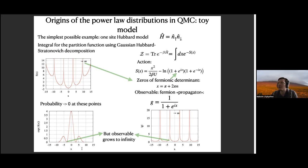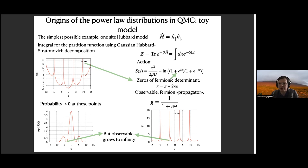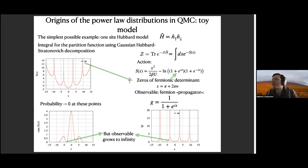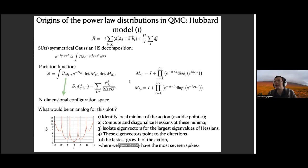At these walls, probability goes to zero, but the fermionic observable — in this case simply the inverse determinant, i.e., the propagator — goes to infinity at exactly the same points. This means qualitatively that very rarely Monte Carlo can approach these points, because probability is small in their vicinity, but simultaneously the fermionic propagator goes to infinity there. Qualitatively this corresponds to the picture of spikes: rarely we encounter some special configurations, and for those special configurations fermionic observables explode. So qualitatively we can connect these spikes with zeros of determinants.